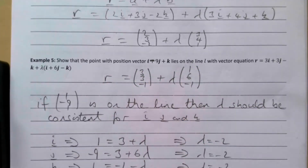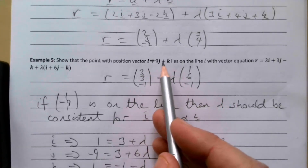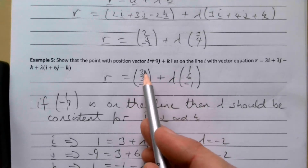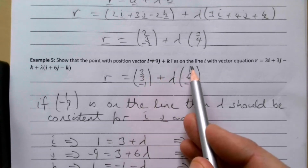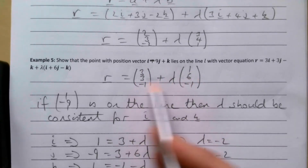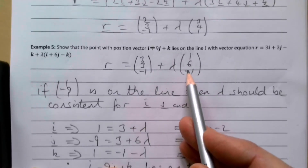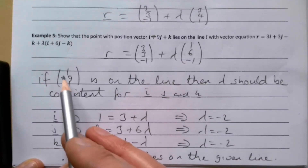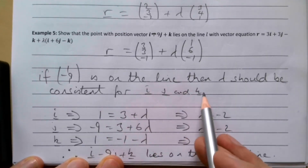If this point is on the line, the value of λ must be consistent for the i, j, and k components — there must be a single value of λ which when substituted gives 1 for i, −9 for j, and 1 for k, and it shouldn't change for each component. Written as a statement: if (1, −9, 1) is on the line, then λ should be consistent for i, j, and k.